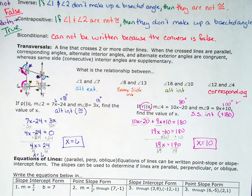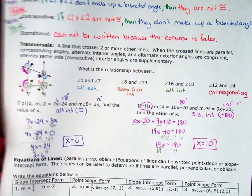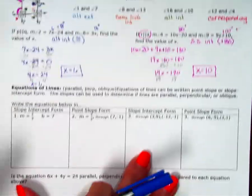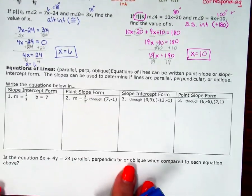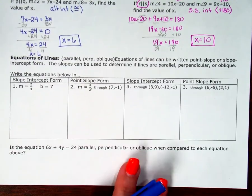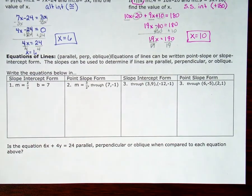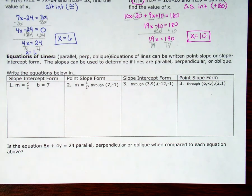In this video, we just finished looking at transversals, and so the last thing we need to check out is equations of lines. Equations of lines can be written in point-slope or slope-intercept form, and then the slopes can be used to determine if lines are parallel, perpendicular, or oblique.